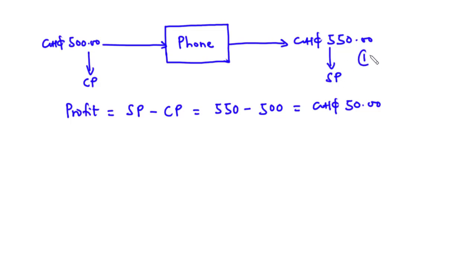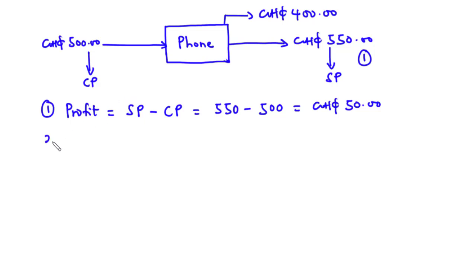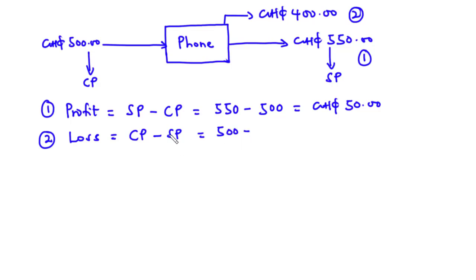Now let's consider a second case. Assuming that after buying the phone for 500 Ghana cedis you sold it at 400 Ghana cedis — this time, because the selling price is less than the cost price, we say that you made a loss. The loss is equal to the cost price minus the selling price: 500 minus 400 gives a loss of 100 Ghana cedis.